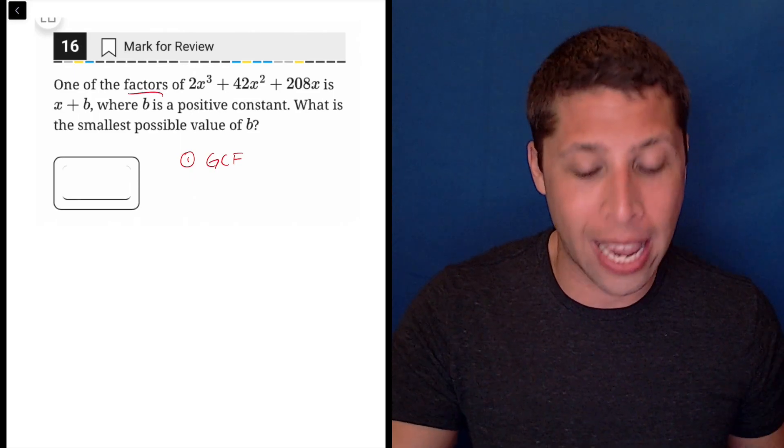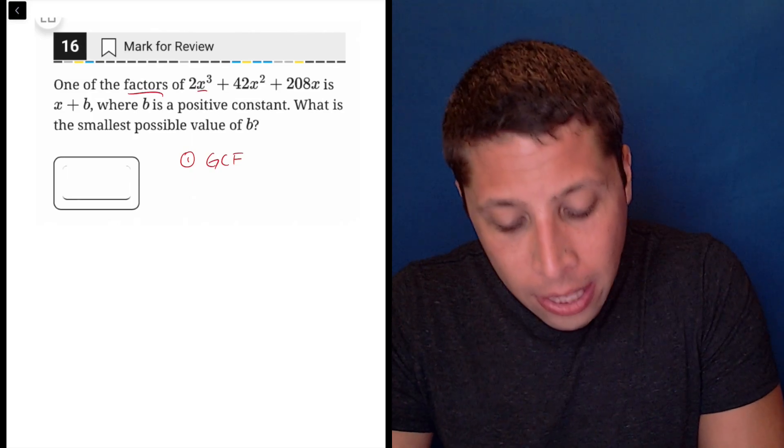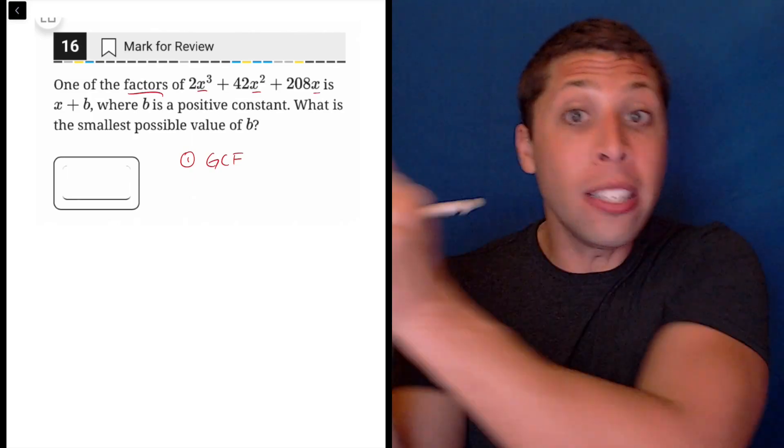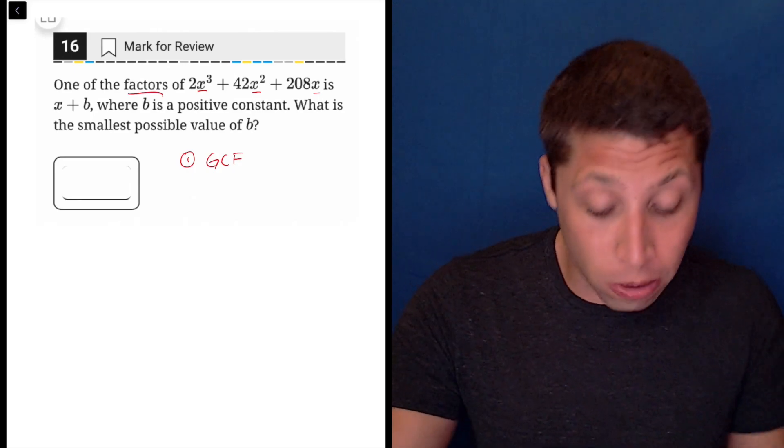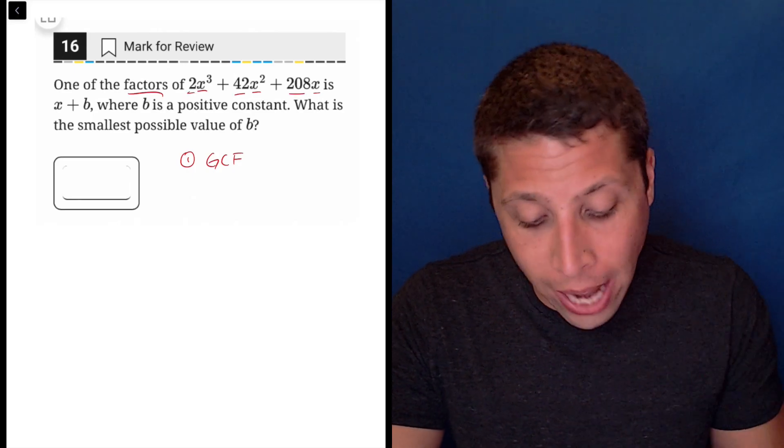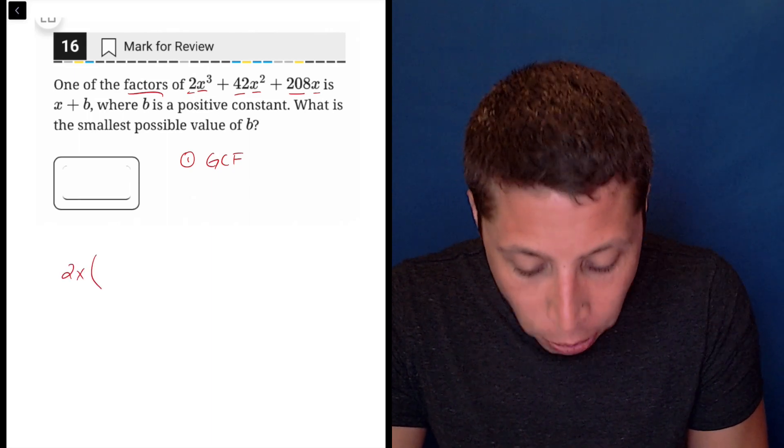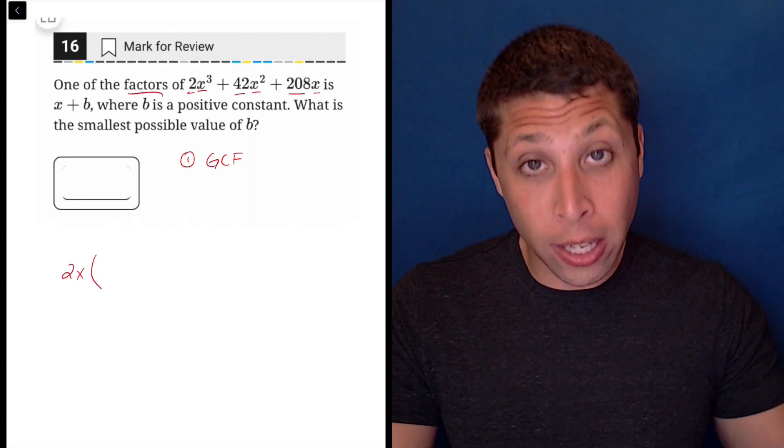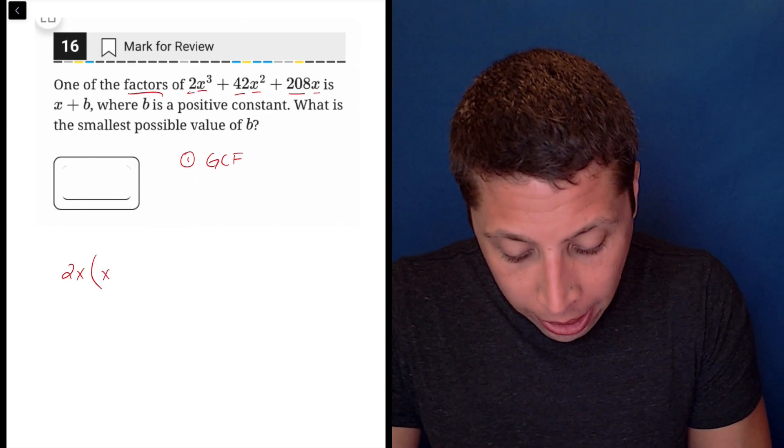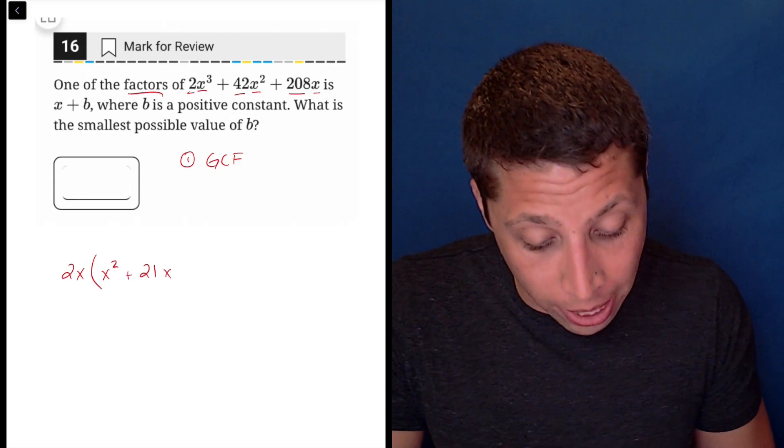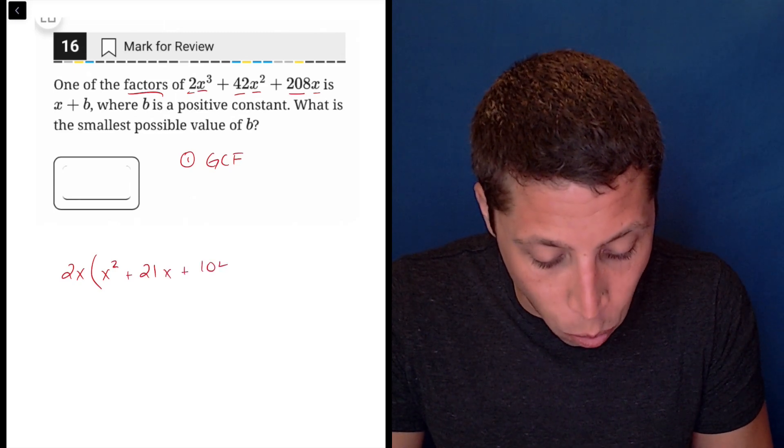Because each of the terms includes an x, I can GCF that out. Each term is also divisible by 2, so I can do that at the same time. My first step is to take 2x out of each component. For the first term, I get x squared. Half of 42 is 21, so that's 21x. And half of 208 is 104.